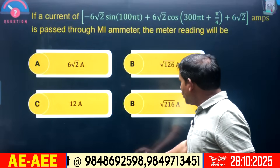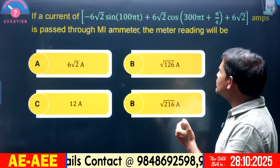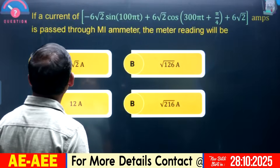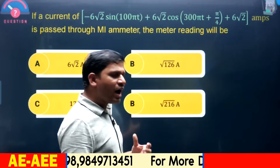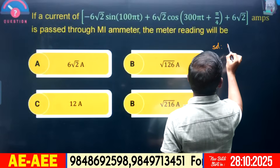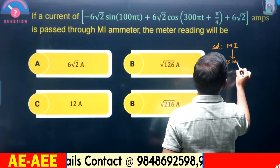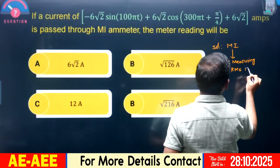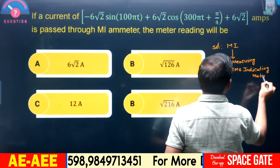This question is about measuring average and RMS values using meters. If a current of −6√2 sin(100πt) + 6√2 cos(300πt + π/4) + 6√2 amperes is passed through an MI ammeter, what is the meter reading? The MI meter is an RMS measuring and RMS indicating meter, so whatever input is applied, it measures the RMS value.